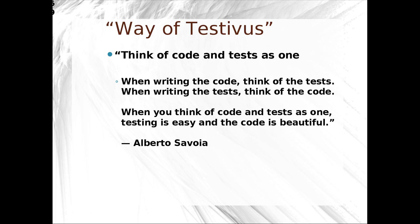From the Way of Testivus by Alberto Savoia: think of code and tests as one. When writing the code, think of the tests. When writing the tests, think of the code. When you think of code and tests as one, testing is easy and the code is beautiful. What Alberto is trying to get across is that when you write code, think about how to test it. When you're writing tests, think about the code that should implement them. You can write tests first, define the API you want to use, and then implement it.